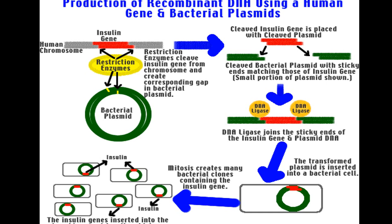After complementarity, we use DNA ligase to join the sticky ends of the insulin gene and plasmid DNA. Once it is ready, the bacterial plasmid is inserted into the bacteria — the transformed plasmid enters a bacterial cell. This hybrid plasmid DNA is now present in the bacteria. This process is called transformation of the plasmid into the bacterial cell.